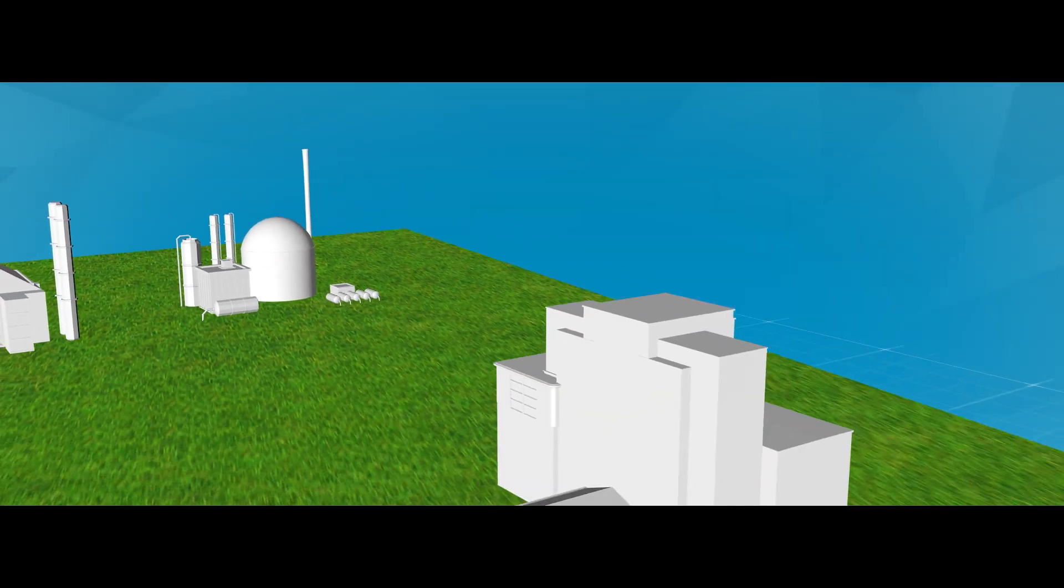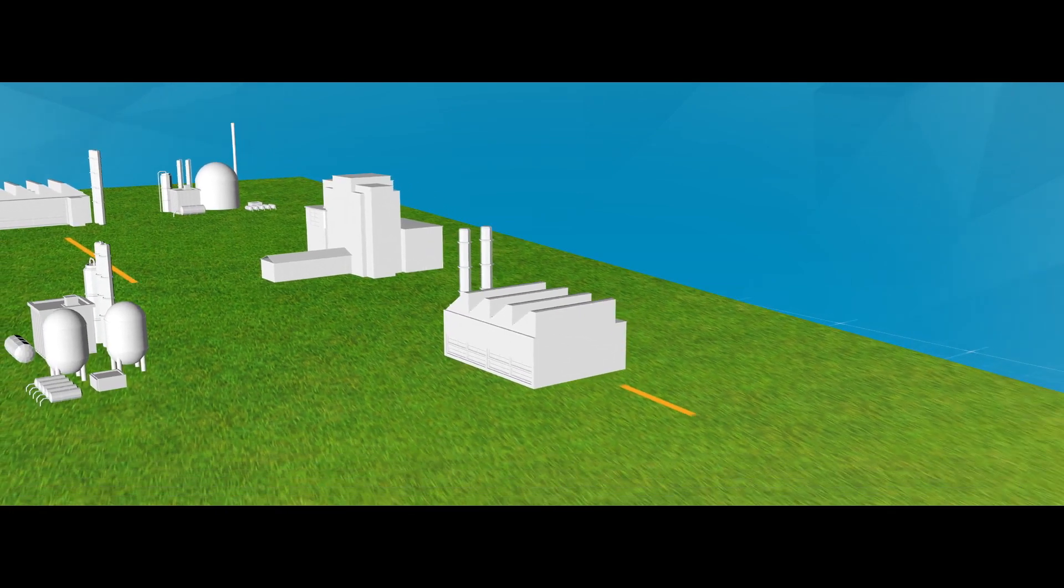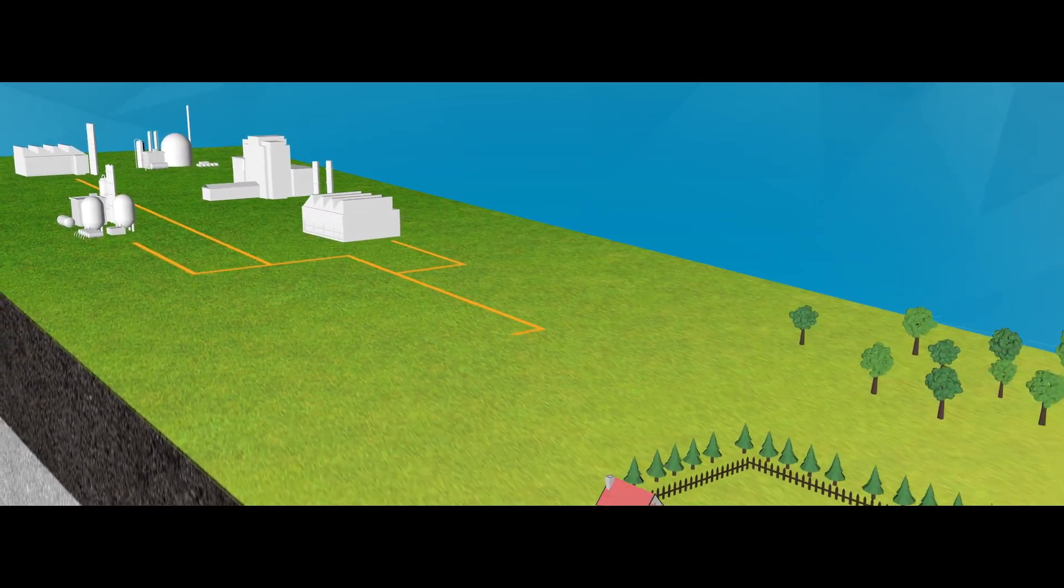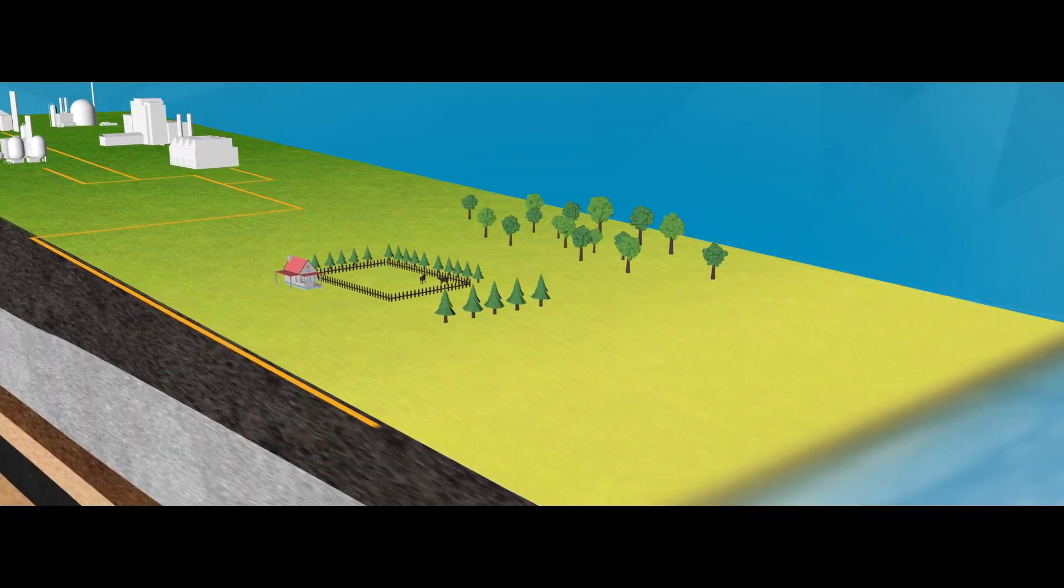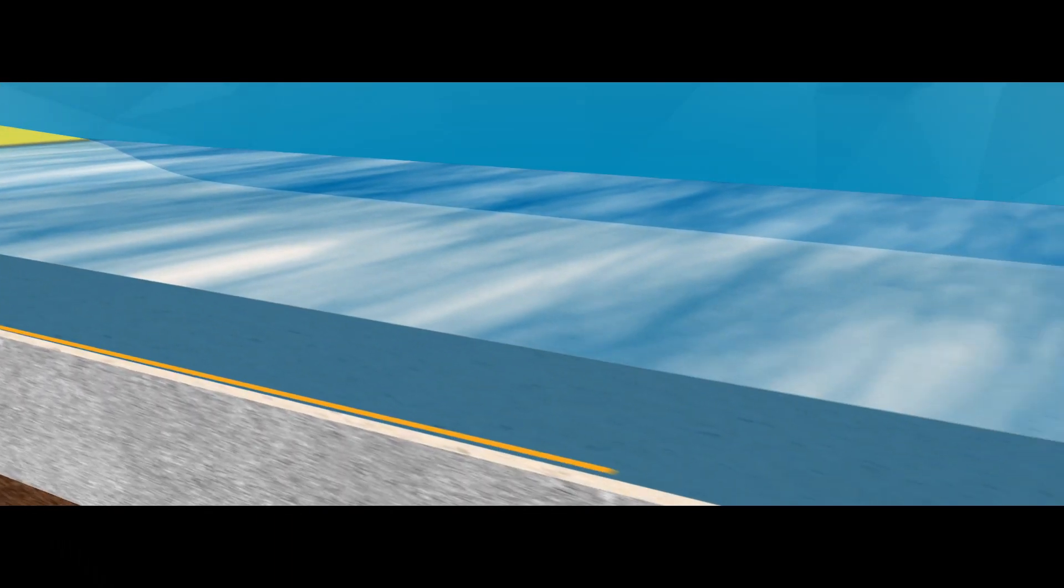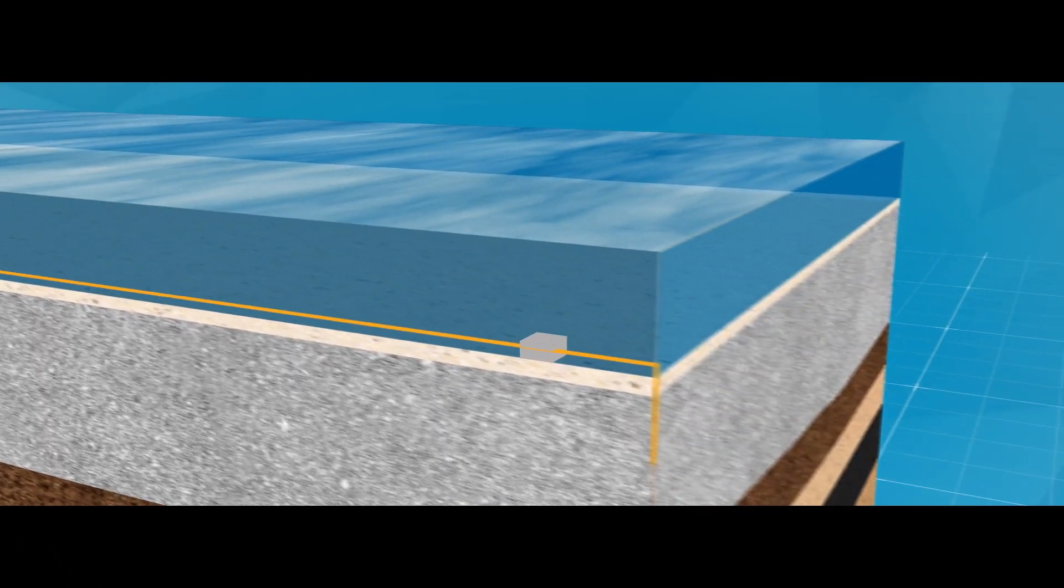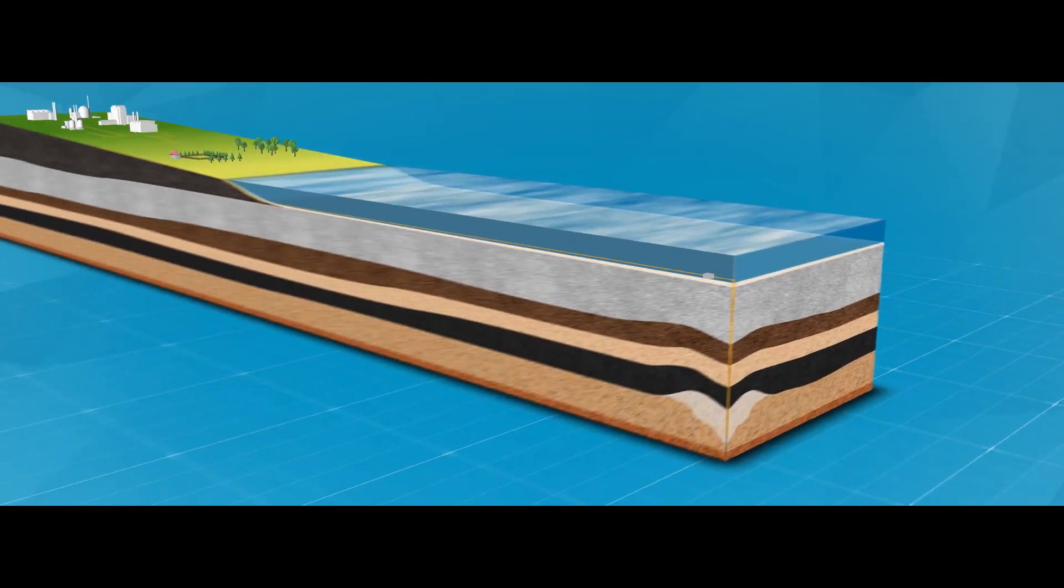Offshore CCS works by capturing carbon dioxide emissions, or CO2, at the source of production. The gas is then compressed, transported via a buried pipeline to a suitable storage site, and injected into rock layers deep underground.